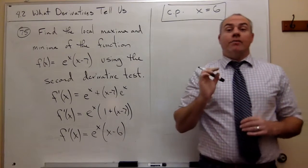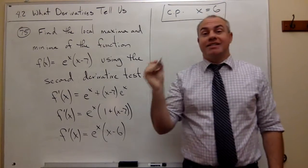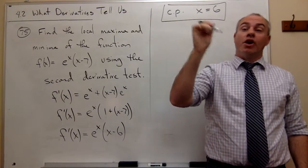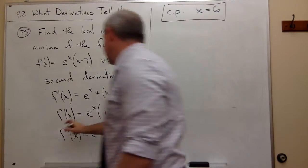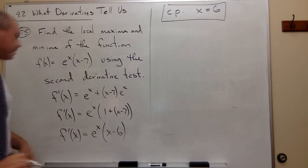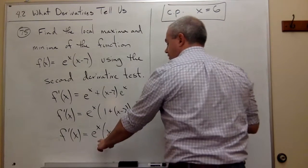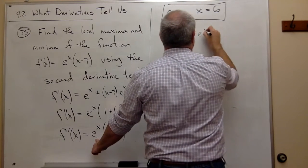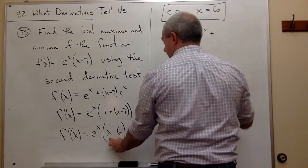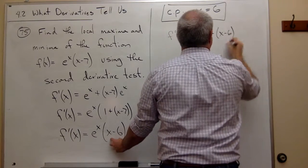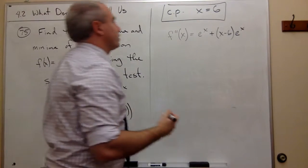Now that I know my critical point — and in some problems you'll have more than one — I'm going to take those critical points and plug them into not the first derivative but the second derivative. So I need to take another derivative. Here's my first derivative; let's find the second derivative. f''(x) would be, again using the product rule: it's the first guy, e^x, times the derivative of the second, which is 1, plus the second, (x minus 6), times the derivative of the first, which is e^x.